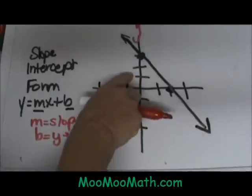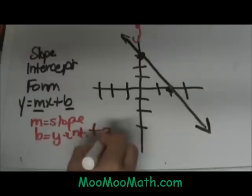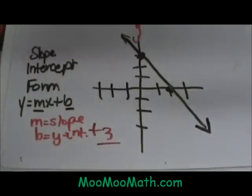This intercept is positive 1, positive 2, positive 3. So I have a y intercept of positive 3 on this line.